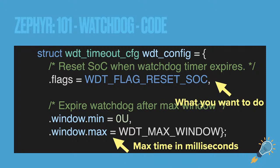The watchdog timer configuration includes what you want it to do and the flags — like reset the SoC. The key field is `window.max`, which is your maximum timeout in milliseconds. For example, I've set things to 10 seconds — 10,000 milliseconds — with a tick timer at around five seconds. The timeout is application-dependent: if you need millisecond or microsecond precision, you'll need to decrease that window.